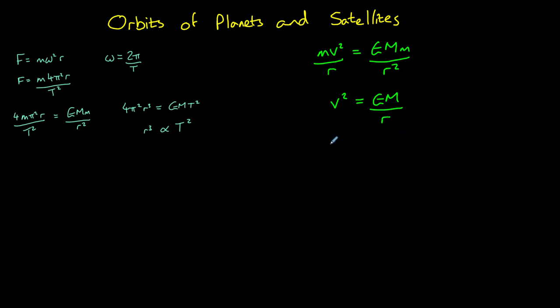Since kinetic energy is equal to half mv², we can substitute v² in here to get half mGM over r, or if we tidy this up a little bit, GMm divided by 2r.